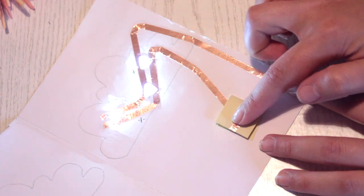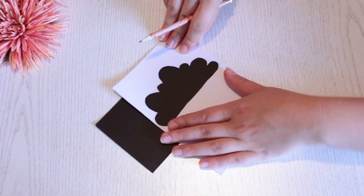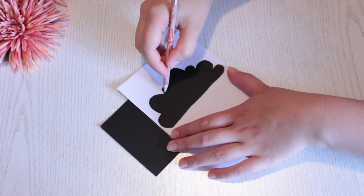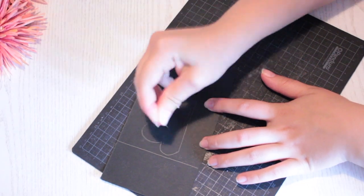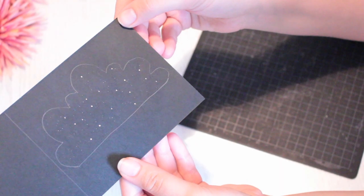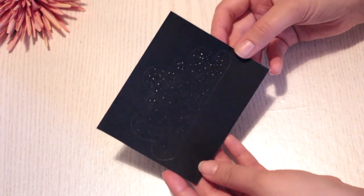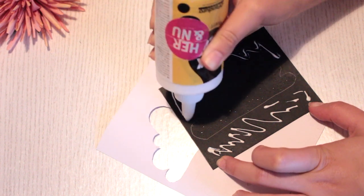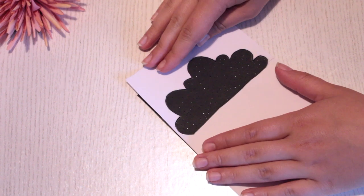Now when the circuit is working, we need to decorate the card. So take some black construction paper and measure out how much you need for the front piece. And also sketch the cloud right onto it. Then use a needle to poke a lot of holes in the cloud. And this is of course so the light will shine through. Then cut the excess part off. Then put some glue all around the image of the cloud and attach it onto the front piece. And press down to make it stick properly.